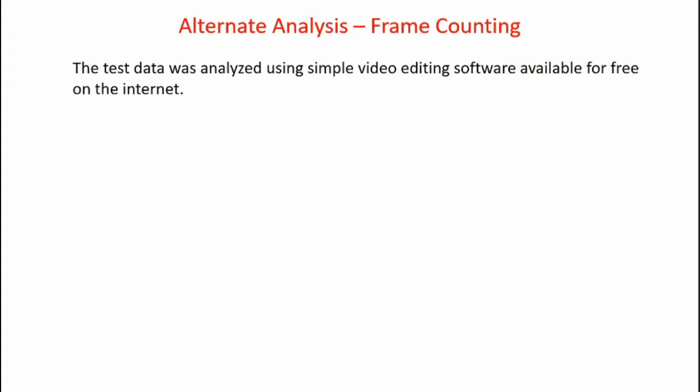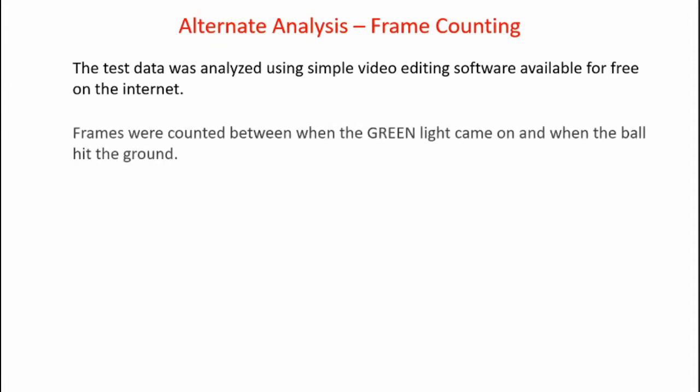Now here's an alternate way to get timing on this experiment. It involves counting video frames. The test data was analyzed using simple video editing software, which is available for free on the internet. The frames were counted between when the green light came on and when the ball hit the ground.